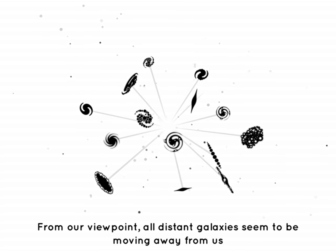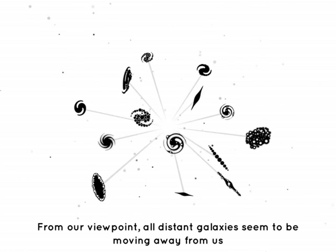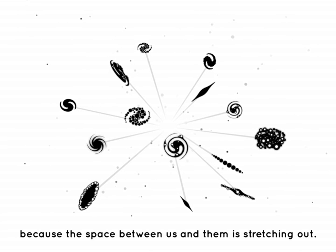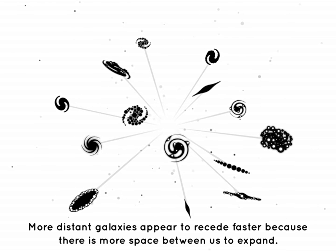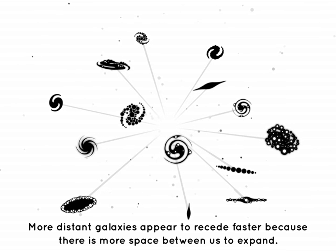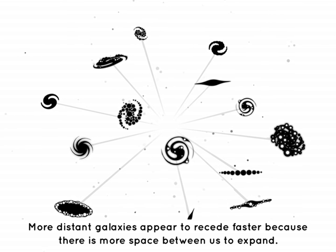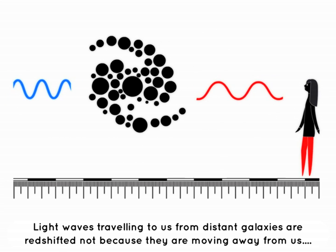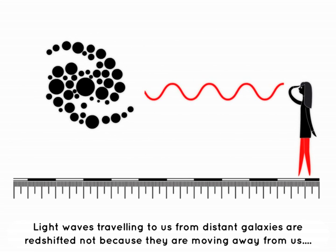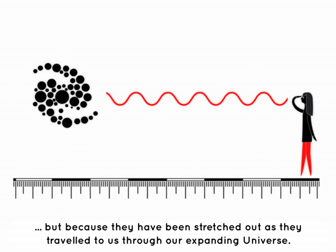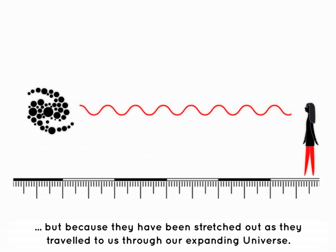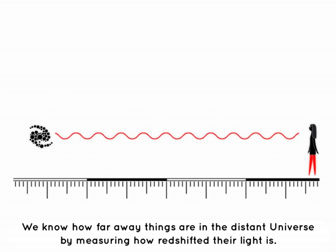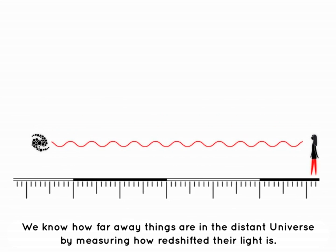We now understand this is because our universe is expanding. From our viewpoint, all distant galaxies seem to be moving away from us because the space between us and them is stretching out. More distant galaxies appear to recede faster because there is more space between us to expand. Light waves travelling to us from distant galaxies are redshifted, not because they are moving away from us, but because they have been stretched out as they travelled to us through our expanding universe.